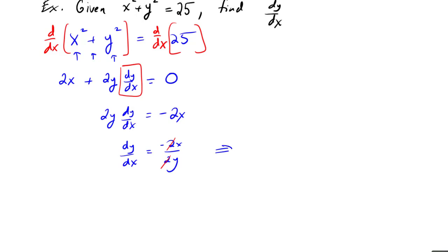The 2s will cancel, so in the end I get dy/dx equals -x over y. There is my derivative. Notice one thing: this derivative looks a little different than before because I actually have a y in the derivative.